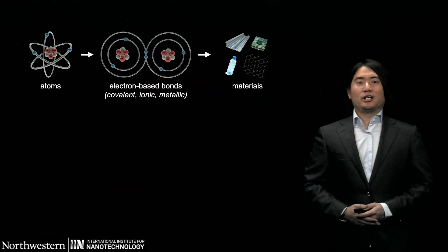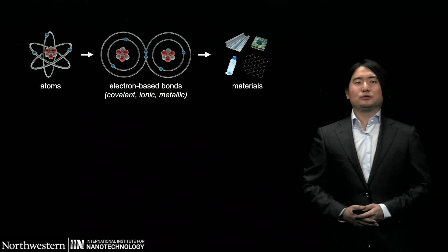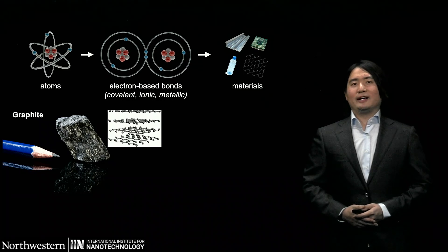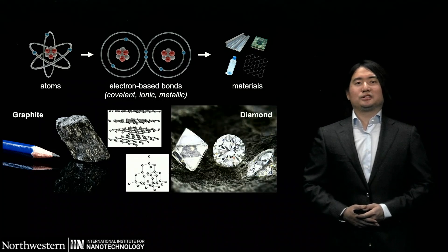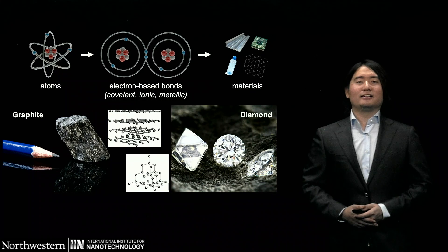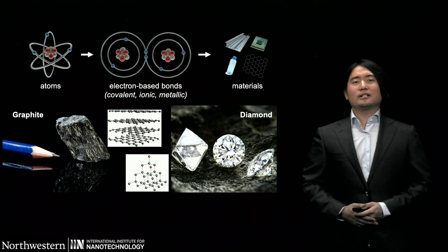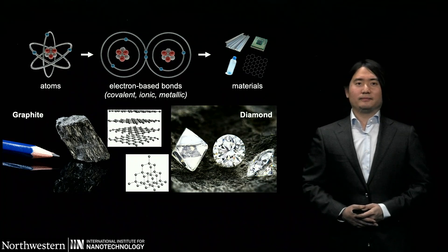Let's start with order. How atoms are arranged determines what kind of materials they will form. For example, the same group of carbon atoms can be arranged into graphite, which is dark and soft, or diamond, which is transparent and hard, depending on how these carbon atoms connect with each other. It all comes down to the arrangement and bonding.